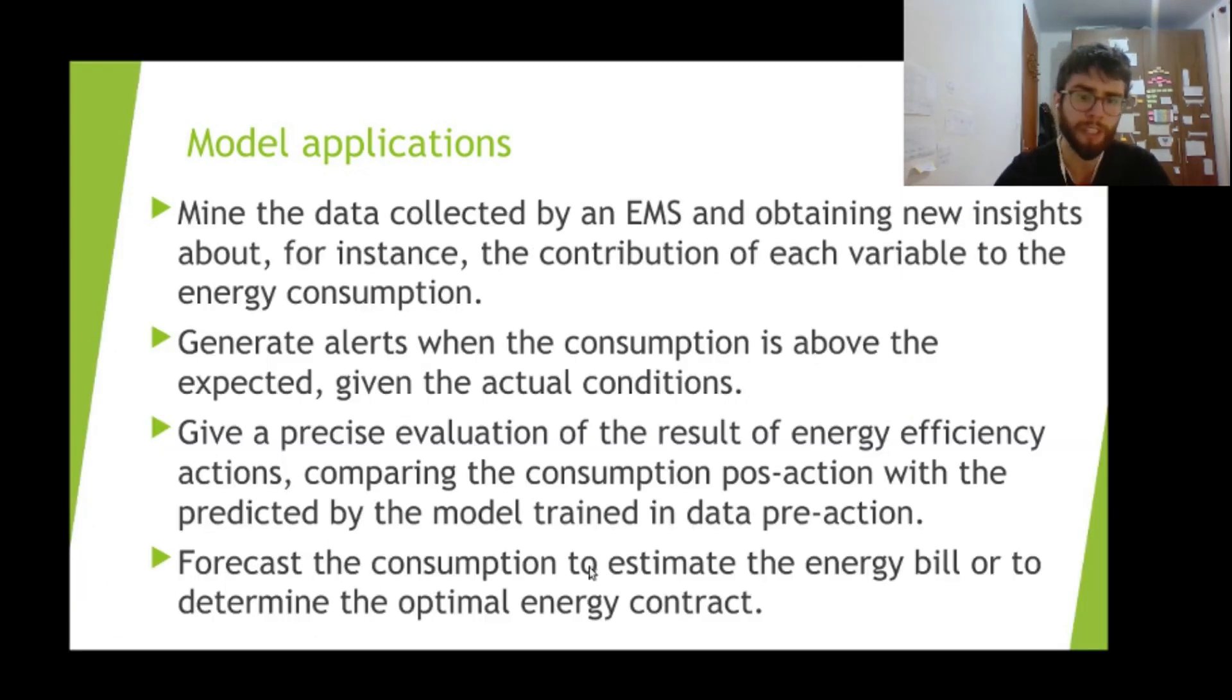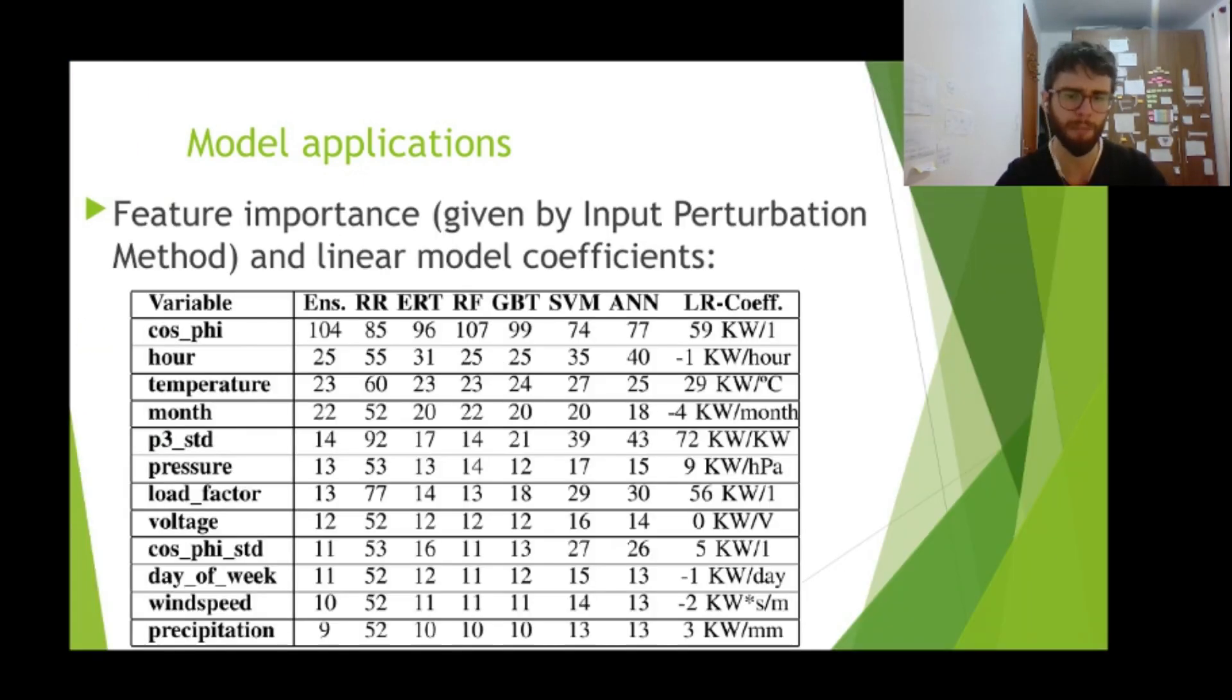For instance, when trying to predict the future consumption, so given the weather forecast, how much will I consume next month. In this type of application, we will not have the power factor available. So removing this variable from the model will lead to a higher error, because it's a very important variable, it's the most important variable in our system.